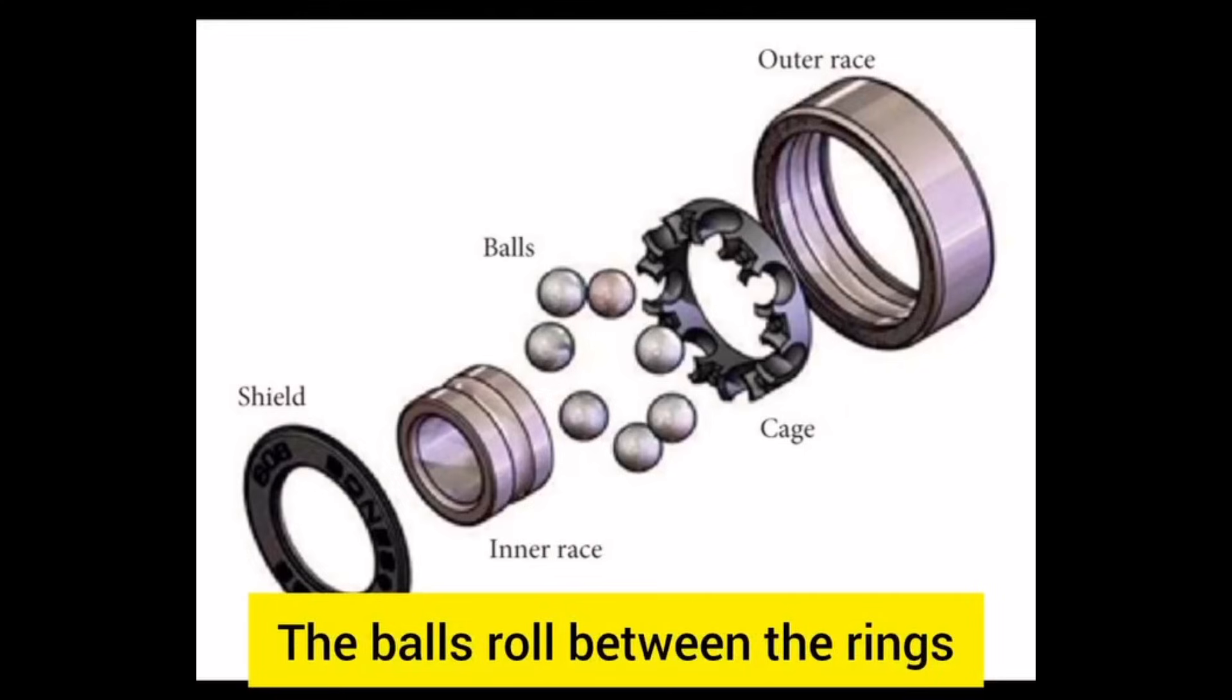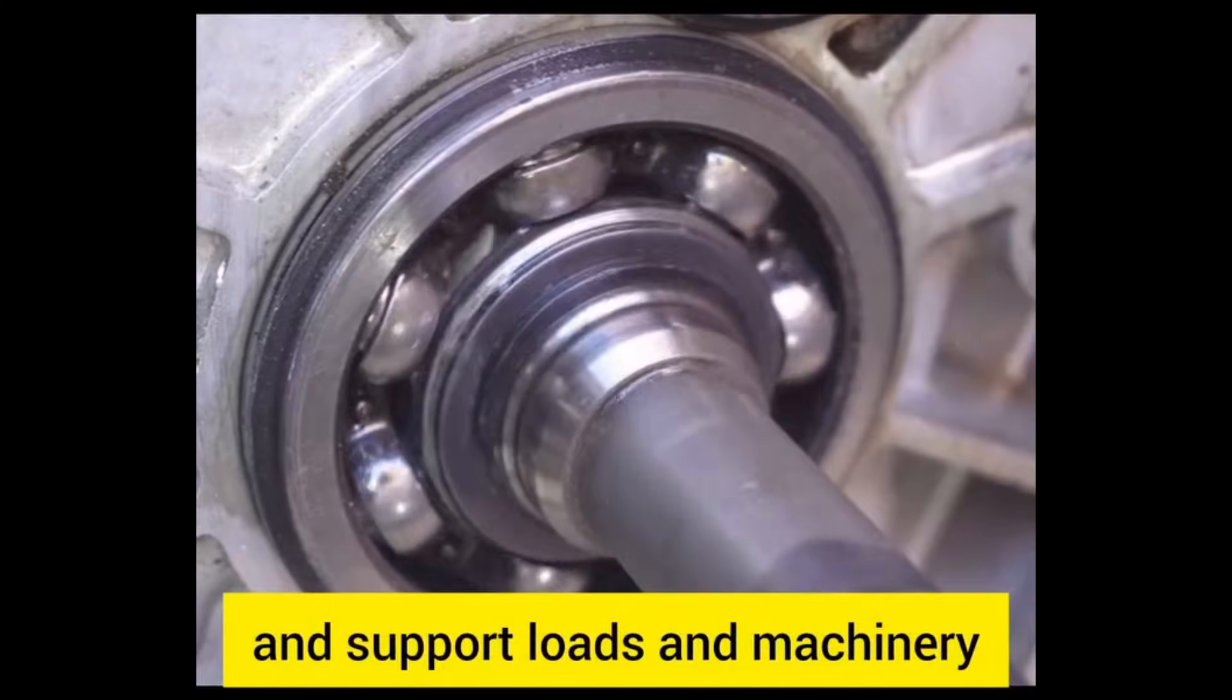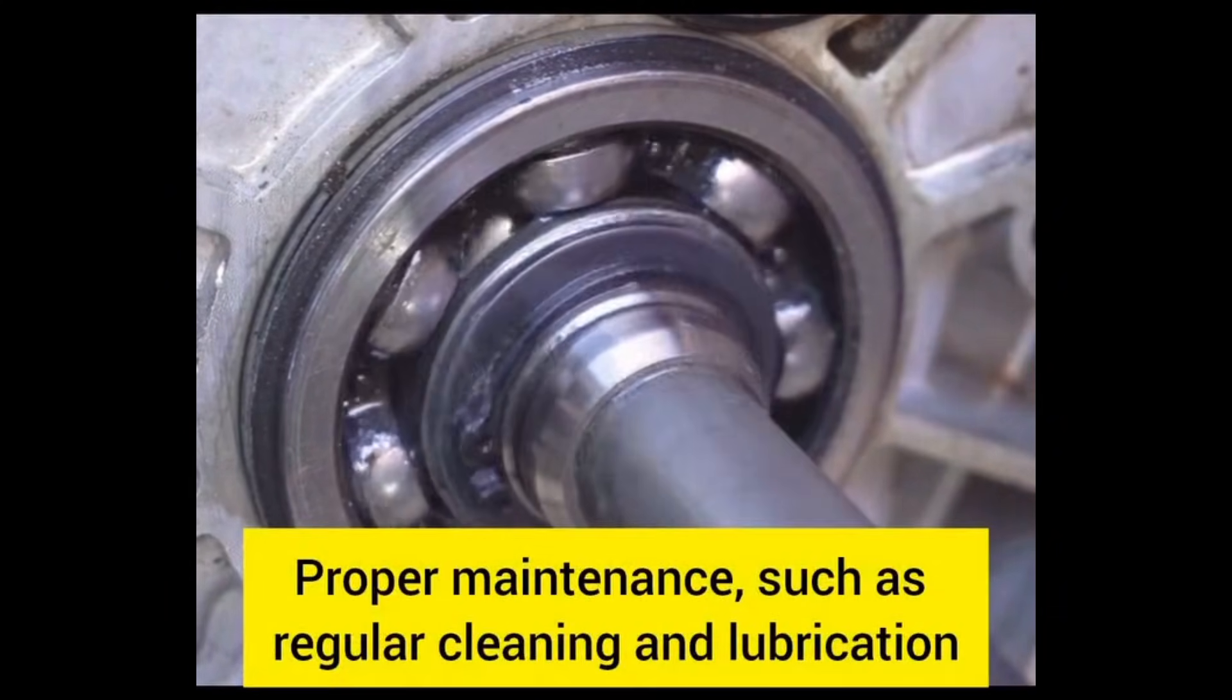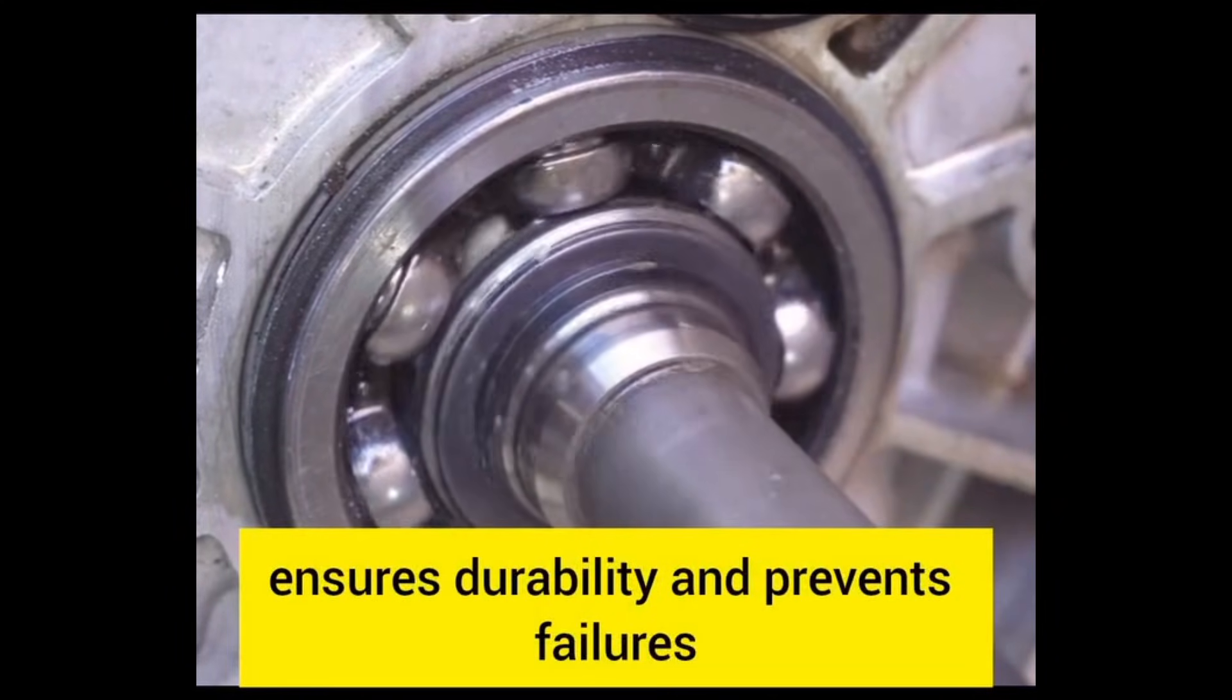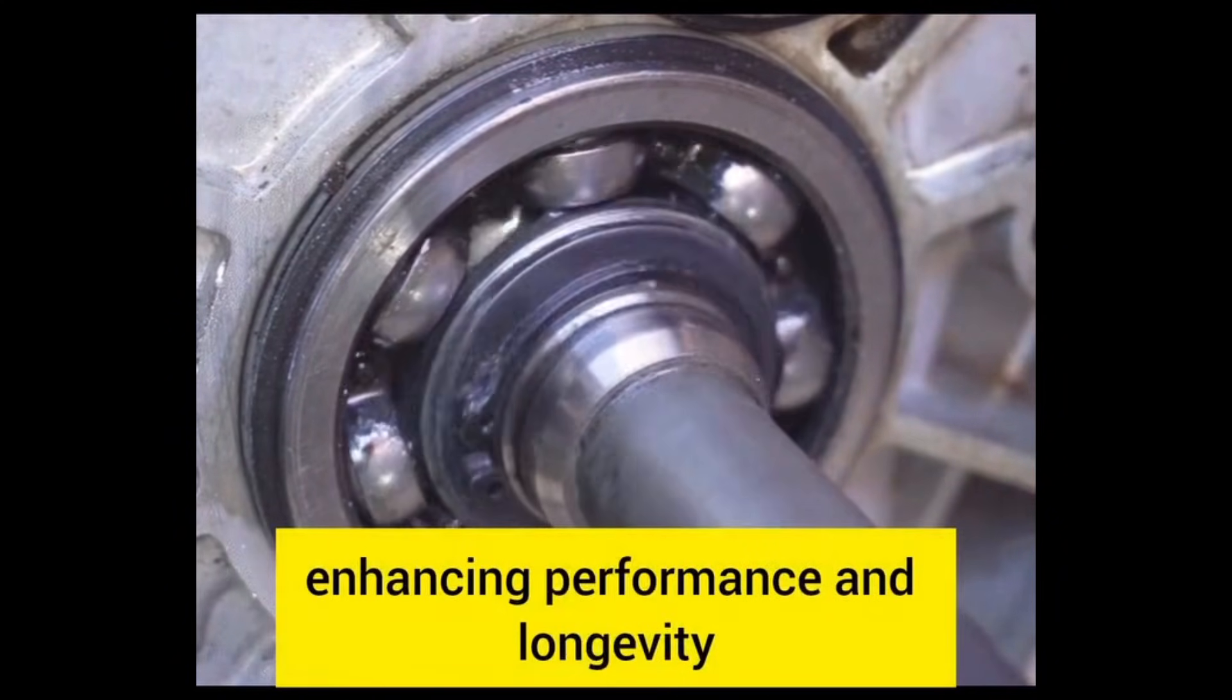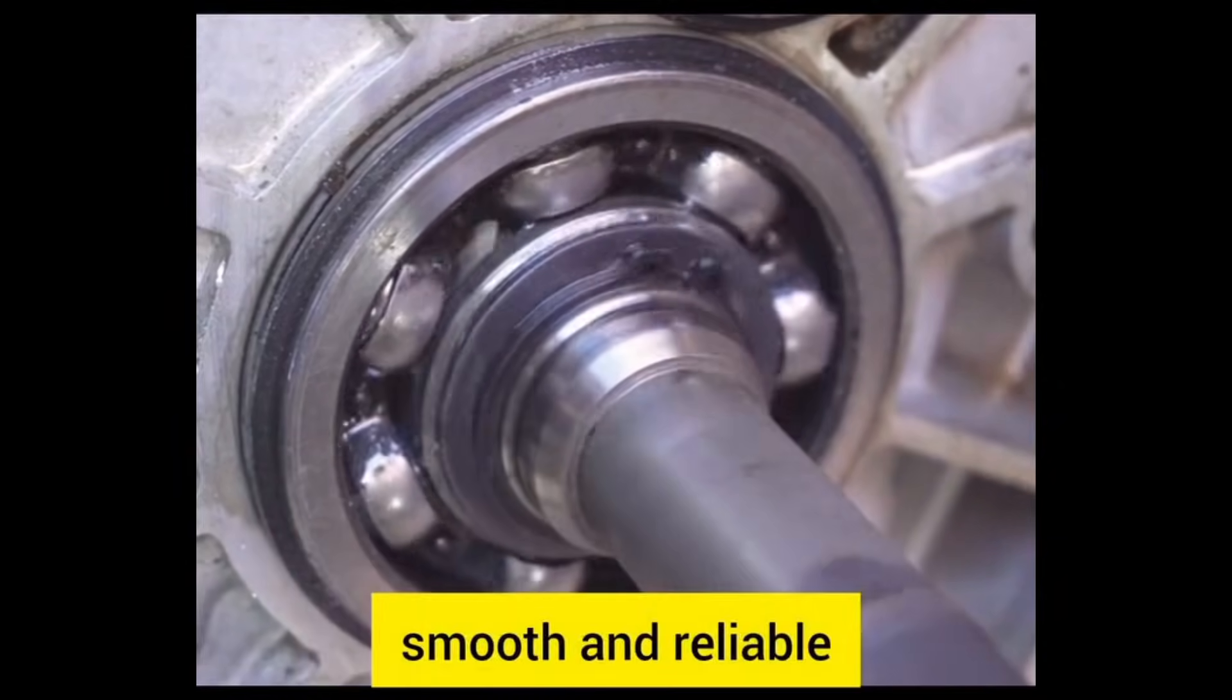The balls roll between the rings, minimizing contact and friction. Ball bearings are used because they increase efficiency, reduce wear, and support loads in machinery. Proper maintenance, such as regular cleaning and lubrication, ensures durability and prevents failures, enhancing performance and longevity. A well-maintained bearing keeps operations smooth and reliable.